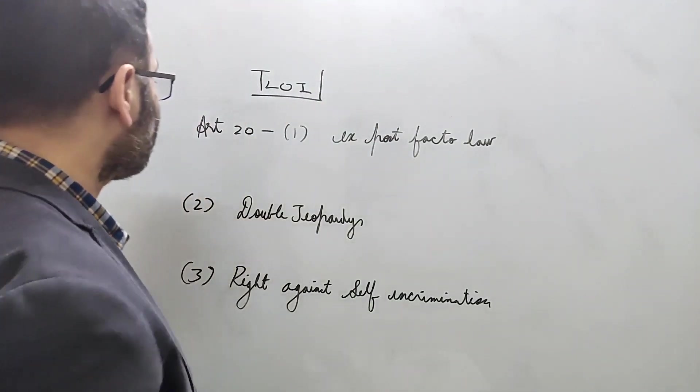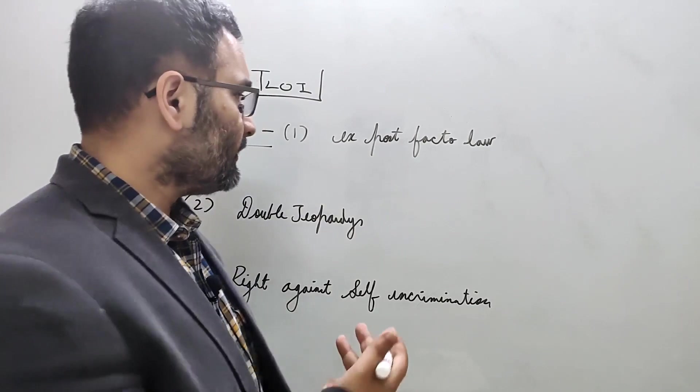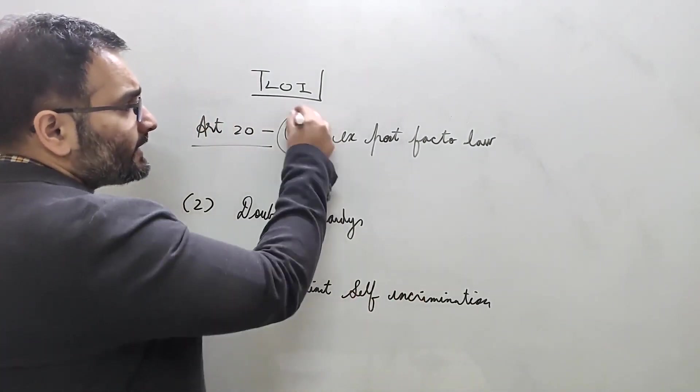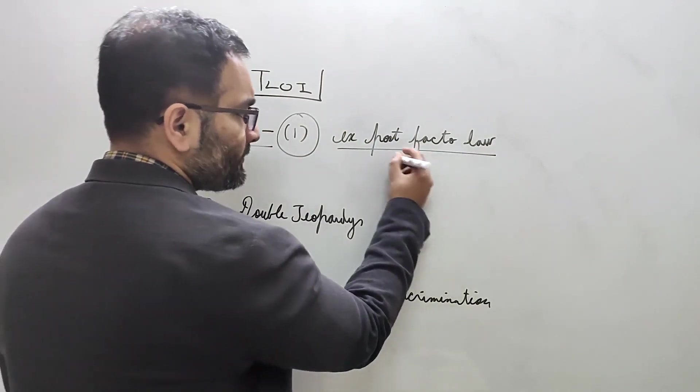Article 20 creates a lot of problems for many of us in law entrances. What does it exactly say? Clause 1 is talking about ex post facto laws. What is ex post facto? Post, just like post-paid number, right? Post facto - after the fact.